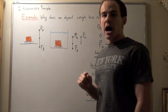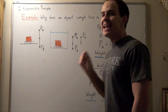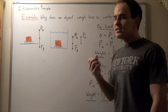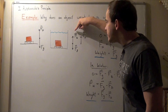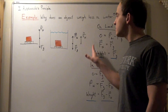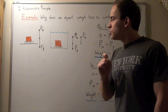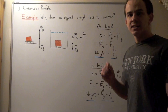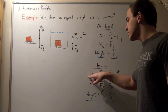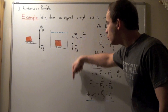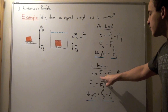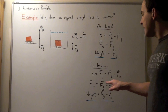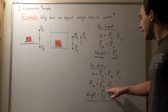Now let's take the same scale and object and place it into our fluid. Now we have not two but three forces: we still have the force of gravity pointing downward and the normal force pointing upward, but now we also have the buoyancy force, which is also pointing upward. Since our object is still stationary, the sum of the net forces is zero: force of gravity minus buoyancy force minus normal force equals zero.